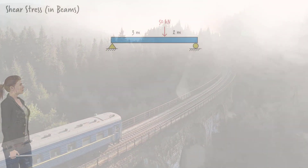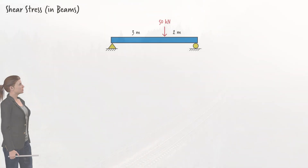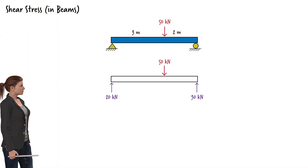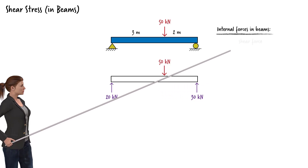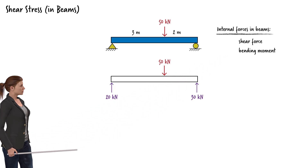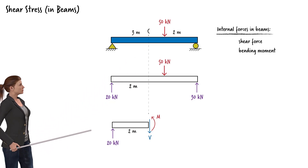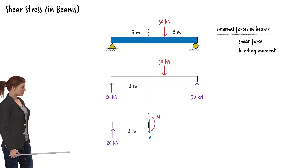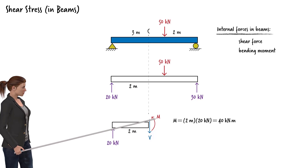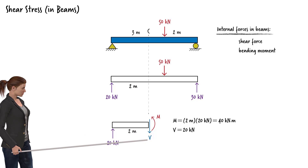Shear stress in beams. Consider a simply supported beam carrying a concentrated load. The applied load produces two internal forces in the beam: a shear force and a bending moment. If we cut the beam at some arbitrary point, we can determine these internal forces at the cut point. The internal bending moment is 40 kNm, and the shear force is 20 kN.